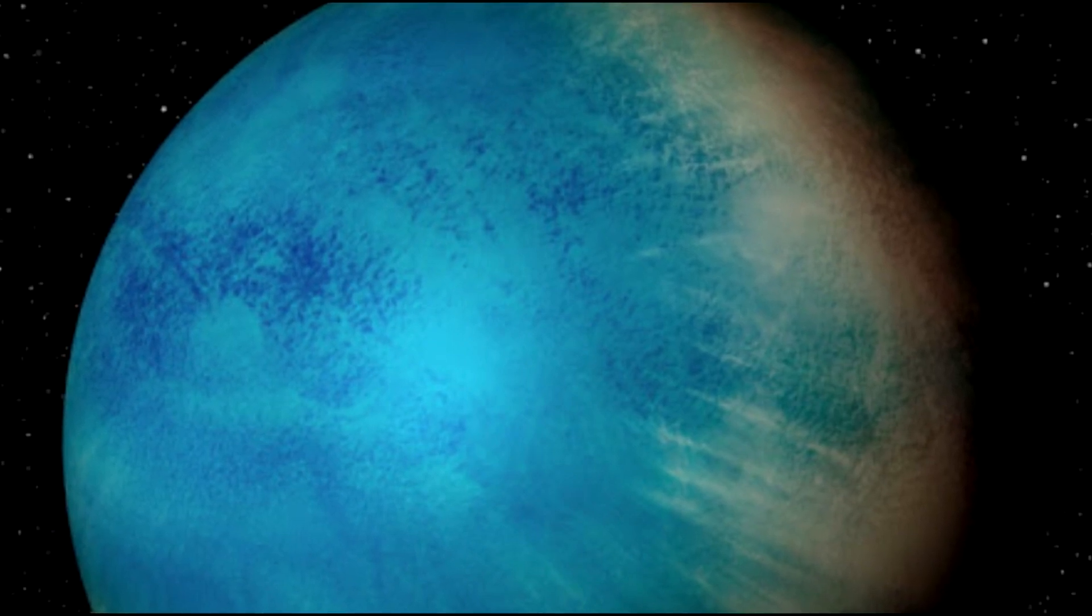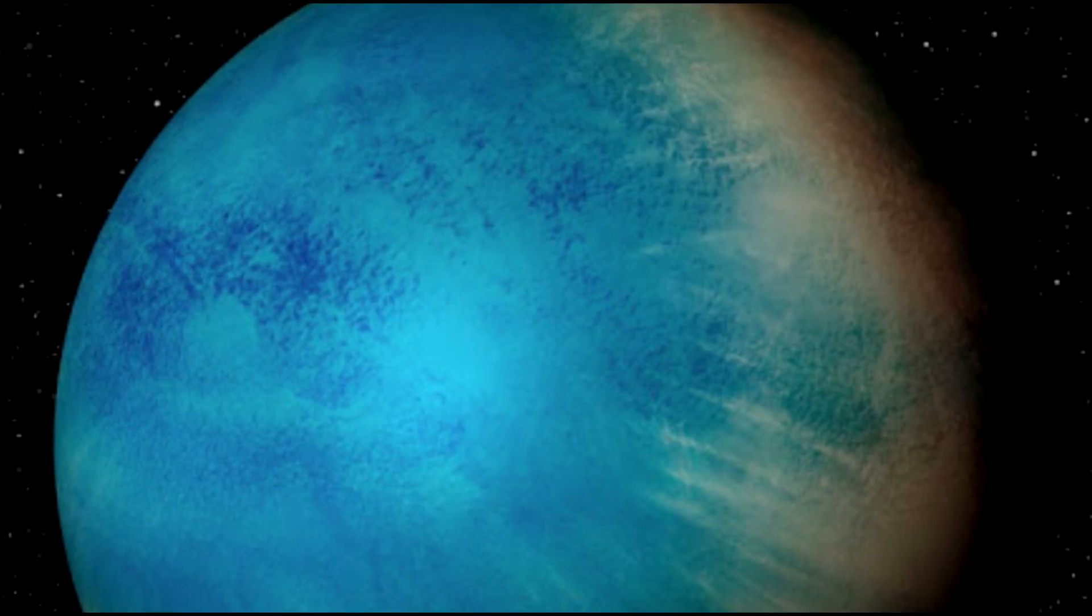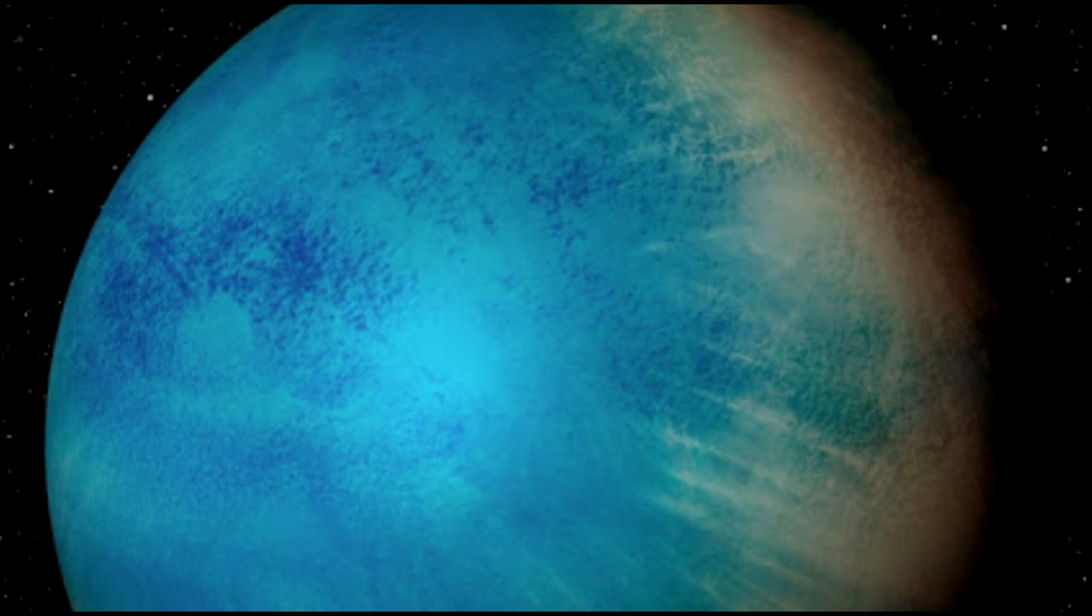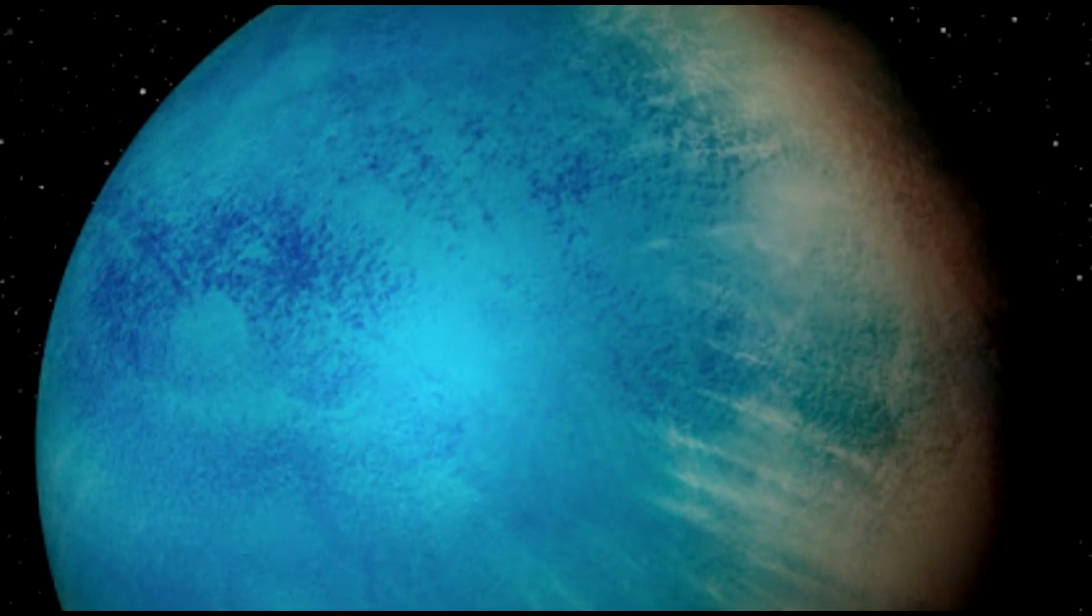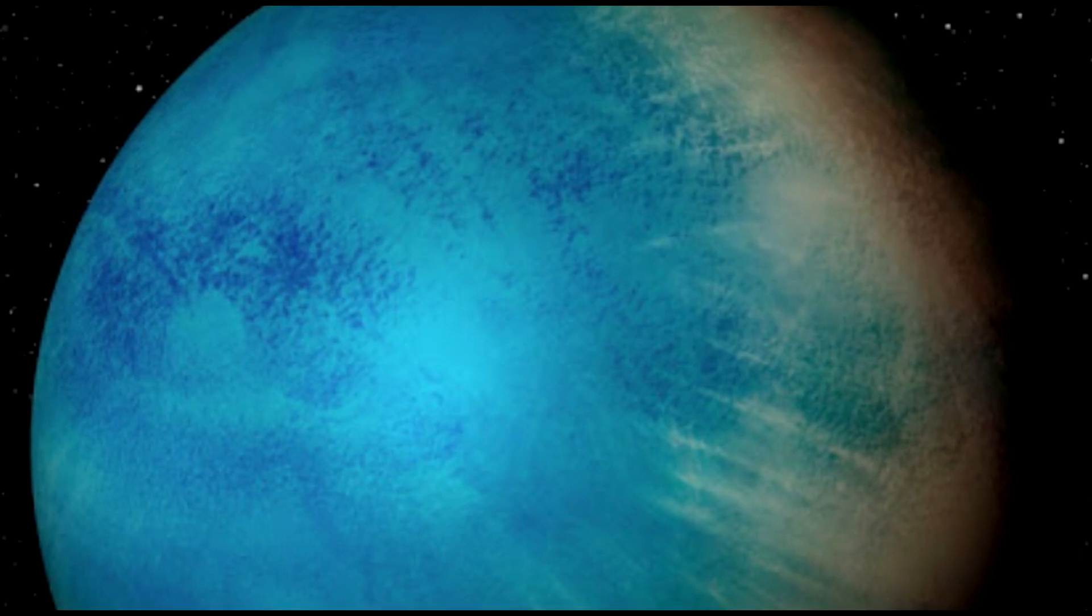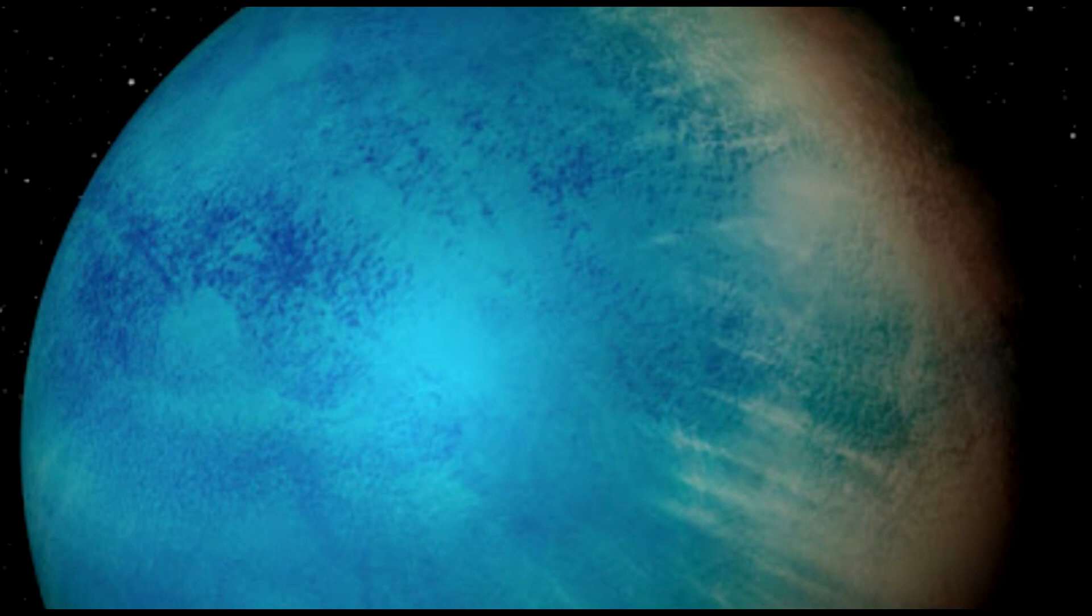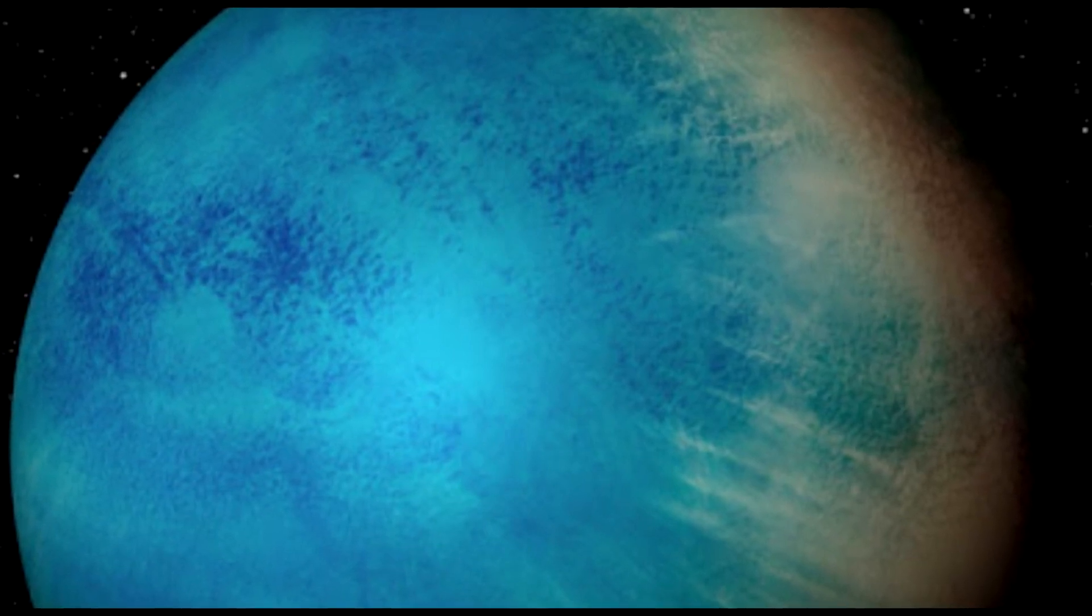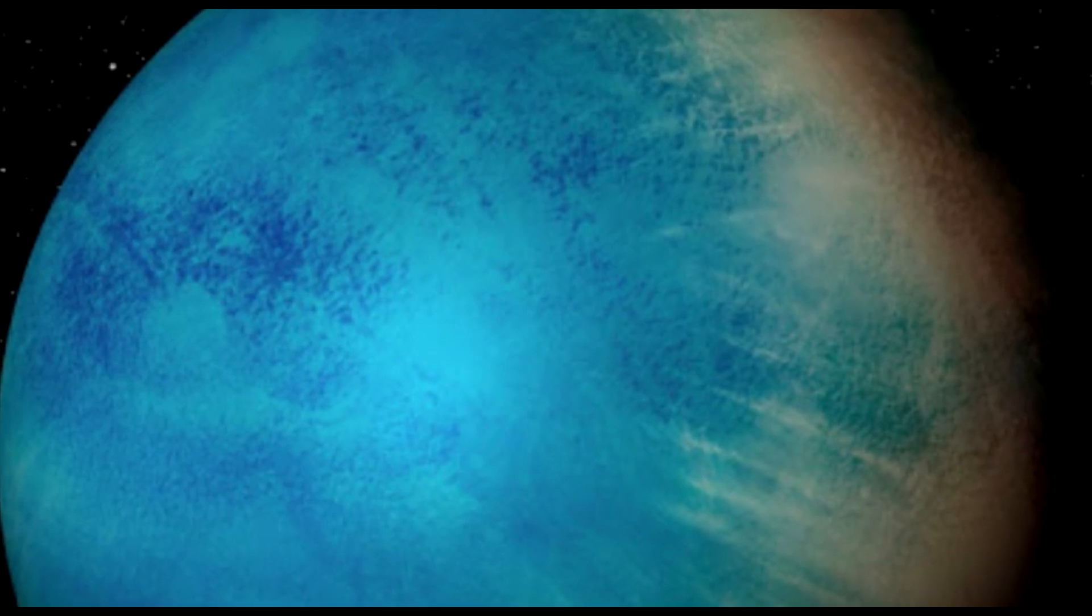It is slightly larger and heavier than Earth, and it is far enough away from its star to host life. A multinational team of researchers discovered TOI-1452b, an exoplanet orbiting one of two tiny stars in a binary system in the Draco constellation. They were led by Charles Cadoux, a PhD student at the Université de Montréal and member of the Institute for Research on Exoplanets.